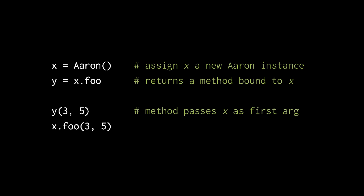that method object wraps x and the function, and then the invocation of the method object causes the function to get called, with x as the first argument, followed by all the remaining arguments here, 3 and 5.